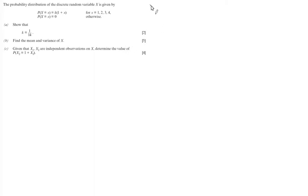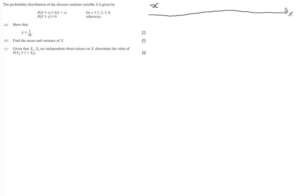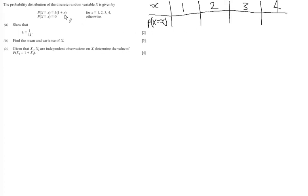I'll start this question with a table where we have x and P(X=x) for values 1, 2, 3, and 4. When x=1 we get k times (1+1) which gives 2k. For x=2 we get k times (1+2) which is 3k. For x=3 we get k times (1+3) which is 4k, and for x=4 we get k times (1+4) which is 5k.